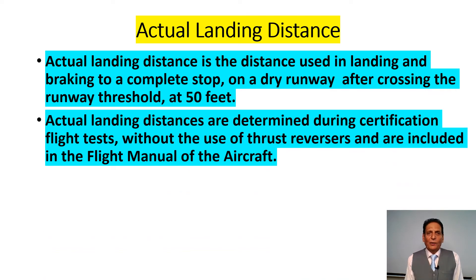We shall have a look at the actual landing distance definition. Actual landing distance is the distance used in landing and braking to a complete stop on a dry runway after crossing the runway threshold at 50 feet. Actual landing distances are determined during certification flight tests without the use of thrust reversers and are included in the flight manual of the aircraft.